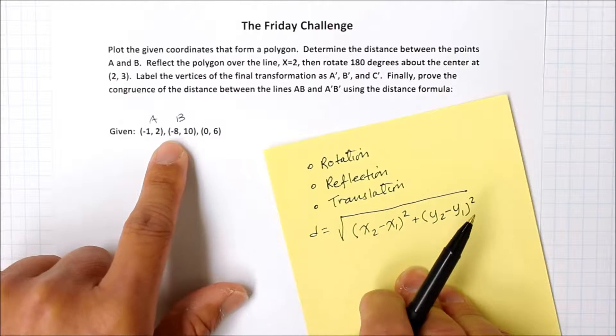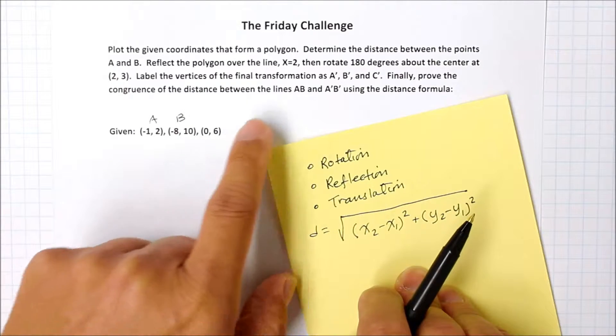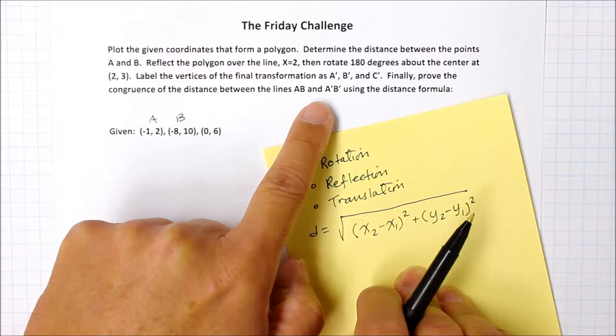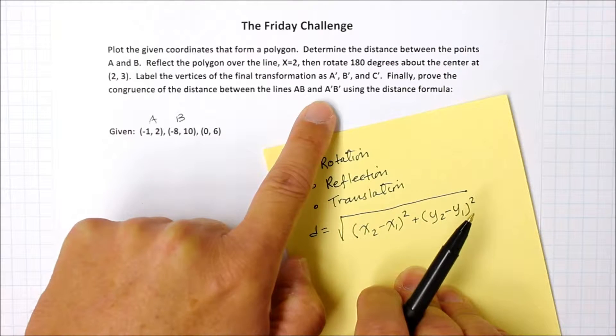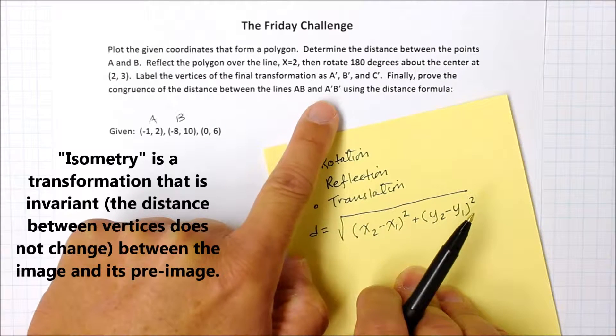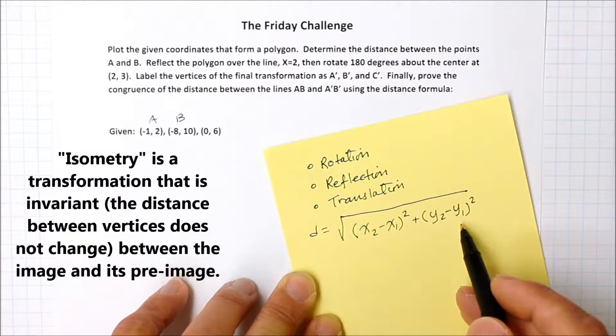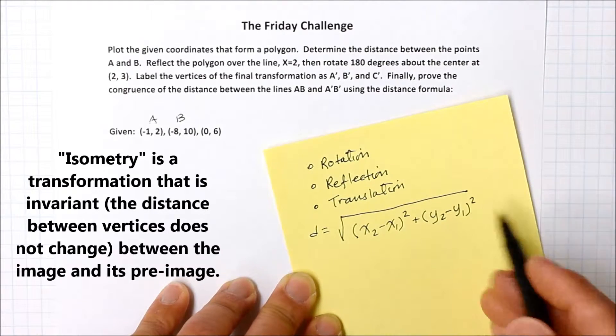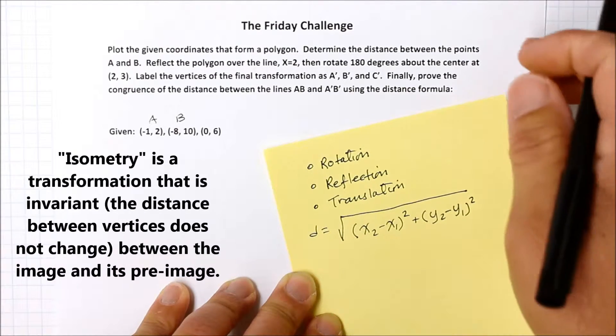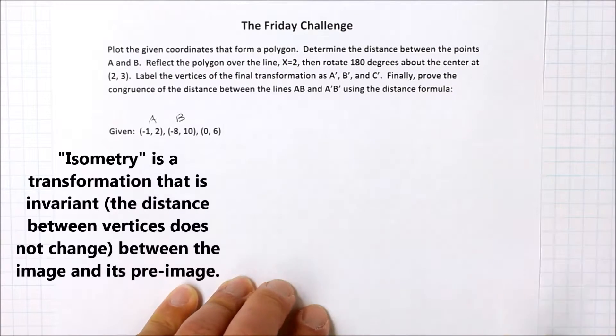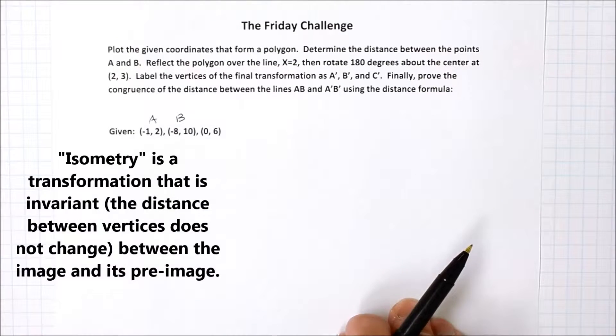After the two transformations, to prove the congruency or isometry between the two polygons, we're going to do another distance formula between the new A and B points, so that if they're congruent, that will numerically prove they retain the size and shape of the polygon. To get started, we're going to first draw the coordinate plane and plot these points.